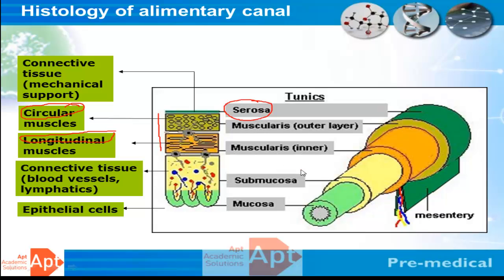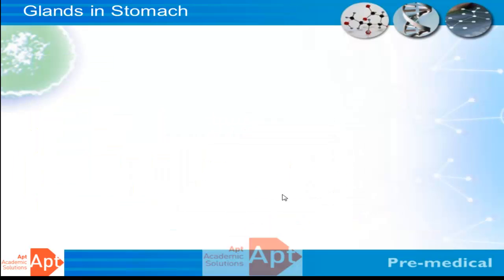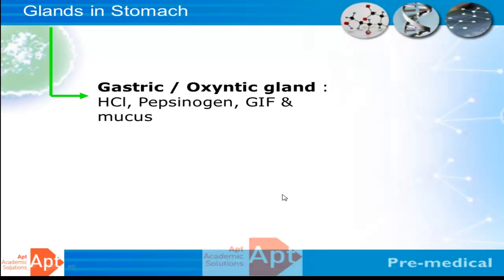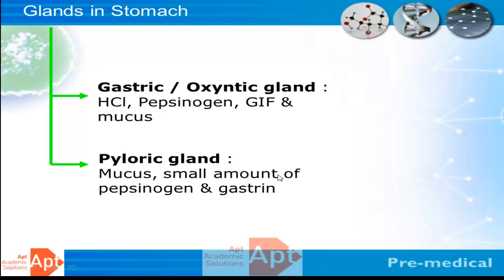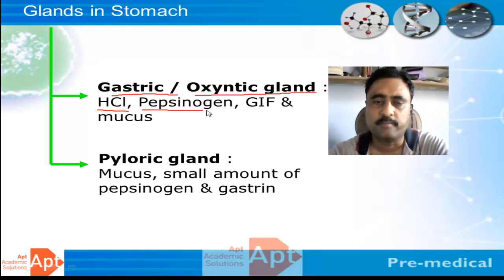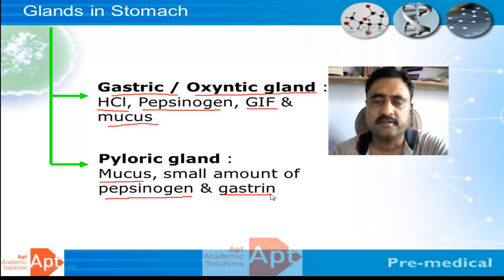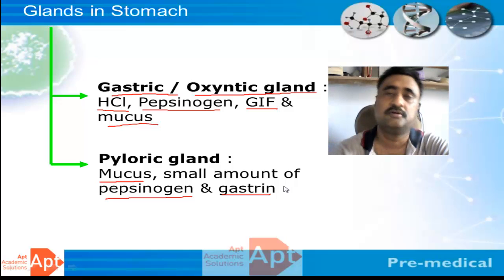There are also two inner layers: the submucosa and the mucosa. Most of the digestive glands are present in the mucosa. In the stomach specifically, all glands and hormones participating in digestion are exclusively present in the mucosa. The major glands can be divided into two types: the gastric or oxyntic gland, which secretes hydrochloric acid, pepsinogen, gastric intrinsic factor, and mucus; and the pyloric gland, which secretes mucus, small amounts of pepsinogen, gastrin, and other hormones.